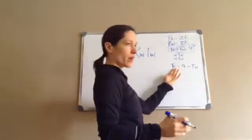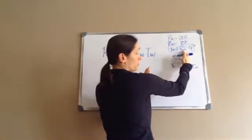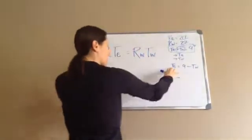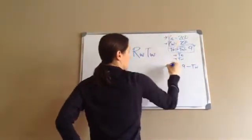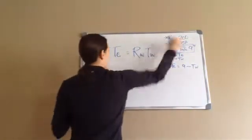So, all I'm doing is answering what one of them is. I could even have done Tw equals 9 minus Te, whichever, it doesn't matter. And so now I'm going to go in and put, I know this one, I know this one, and I know this one. So let's go in and put this one in.